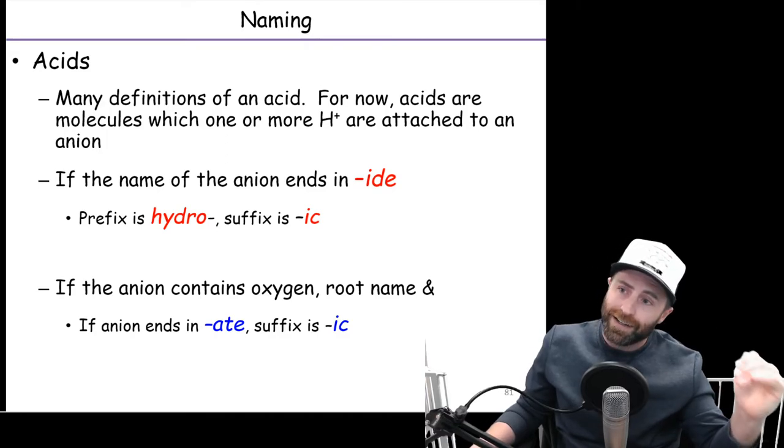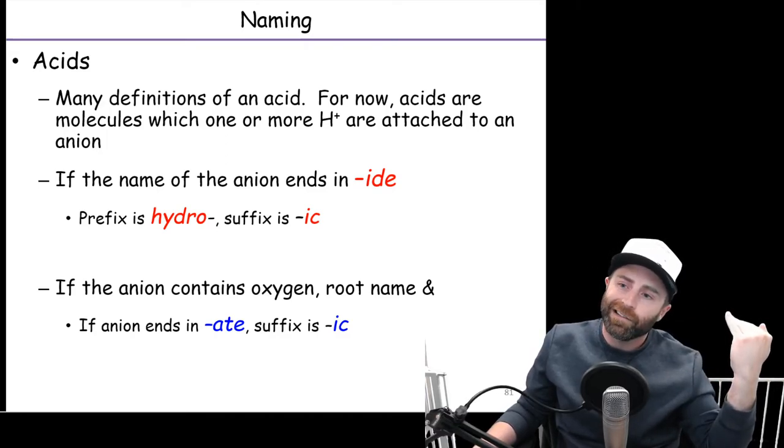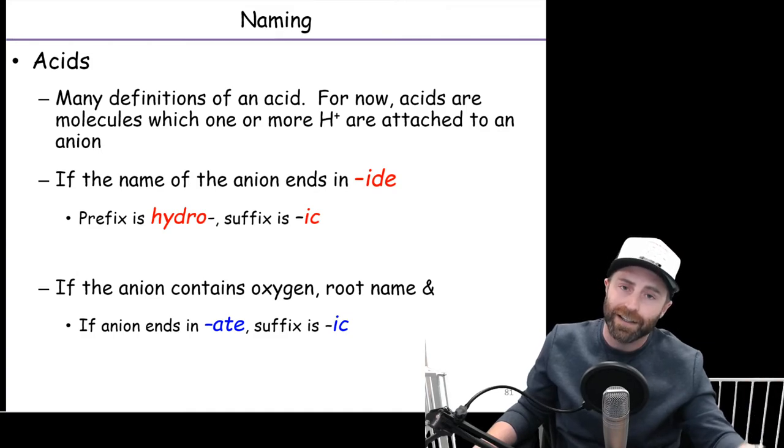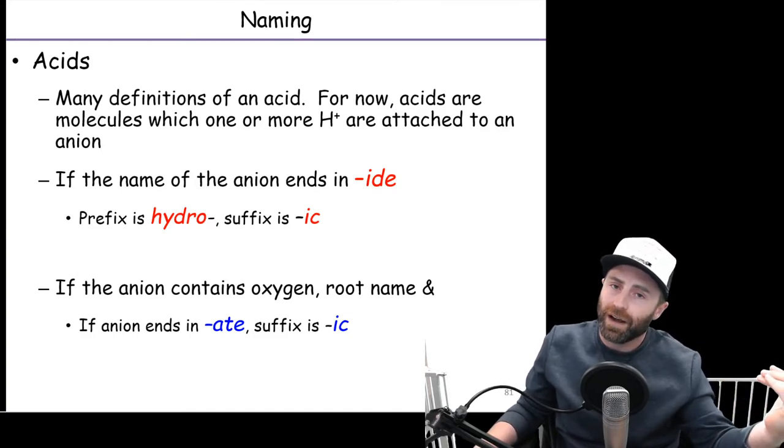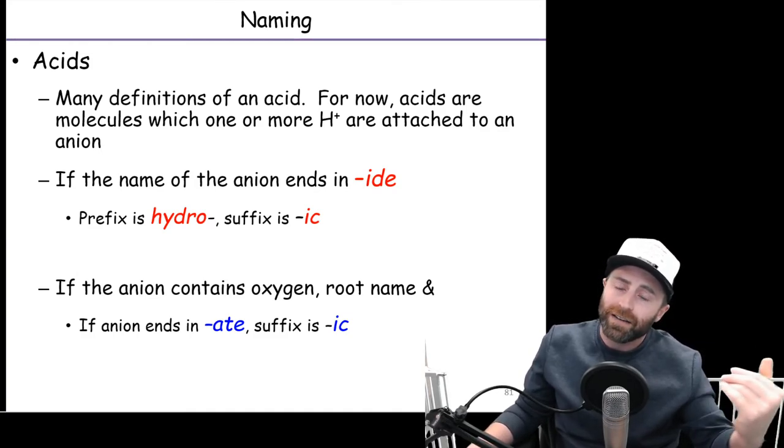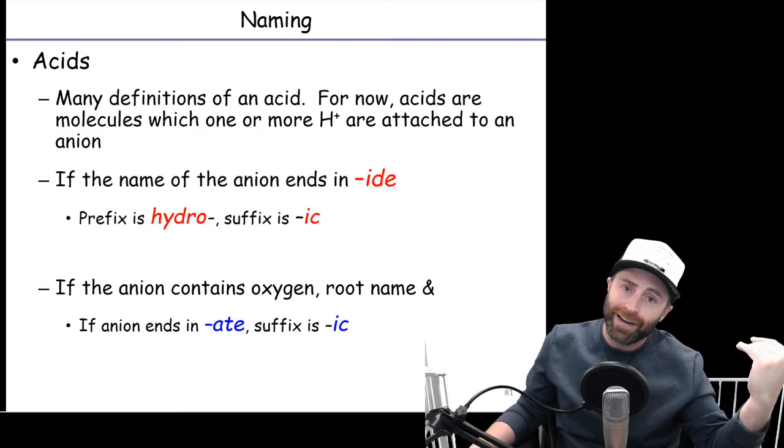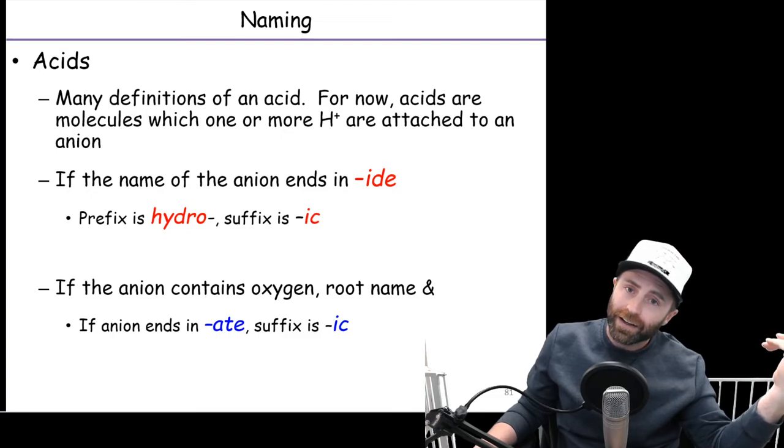If the ending is -ate, you just knock off that -ate and you write in -ic. There's no prefix this time. So nitrate, kill the -ate, so you've got nitr- and then you put the -ic. So nitric acid.